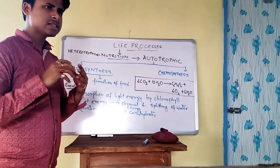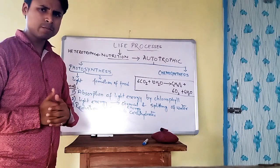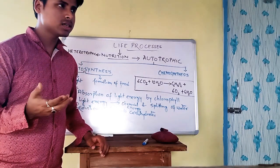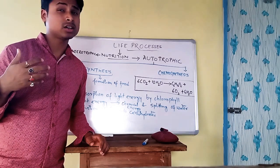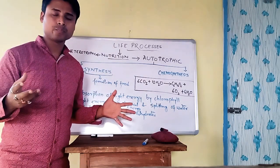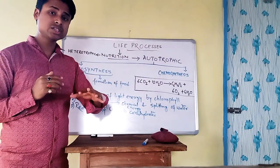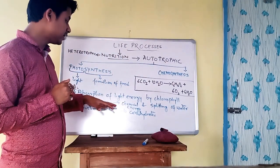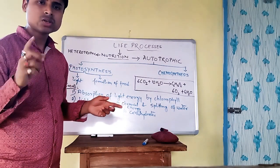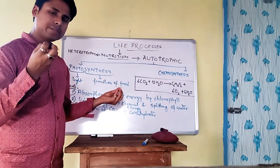One example: desert plants like the cactus, which live in very high temperatures, may lose lots of water if they open their stomata during the day. To protect themselves, they take in carbon dioxide at night, form an intermediate compound, and then during the daytime they take the light energy and make the carbohydrate.